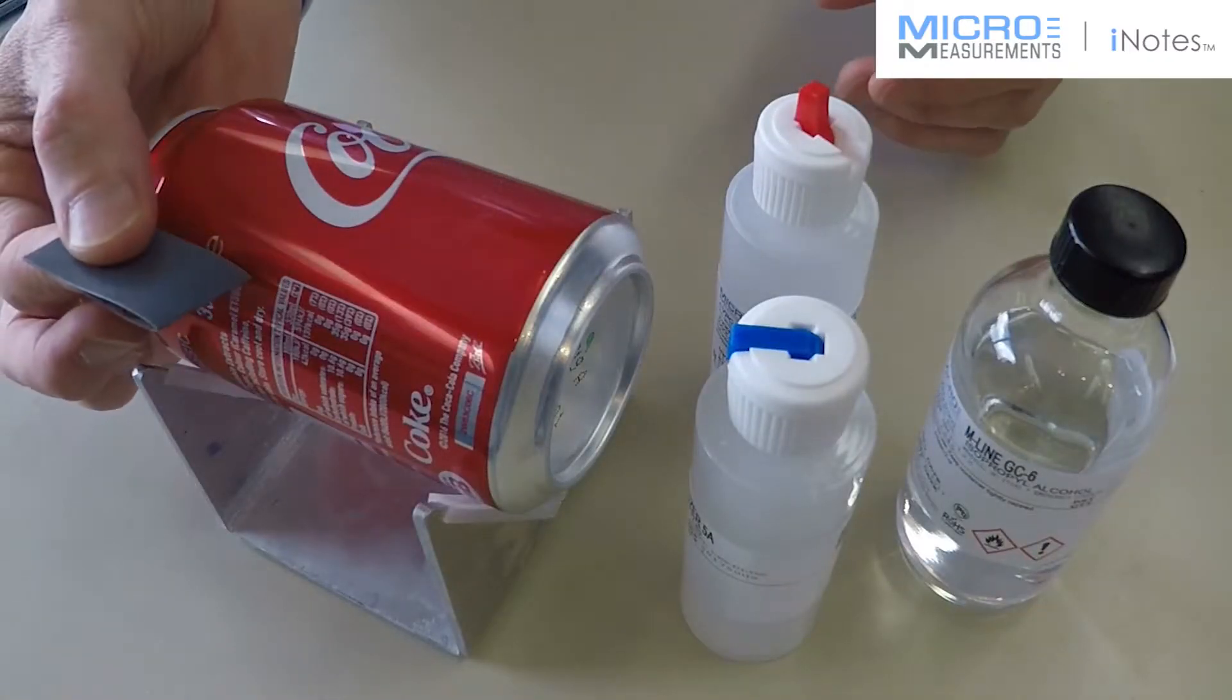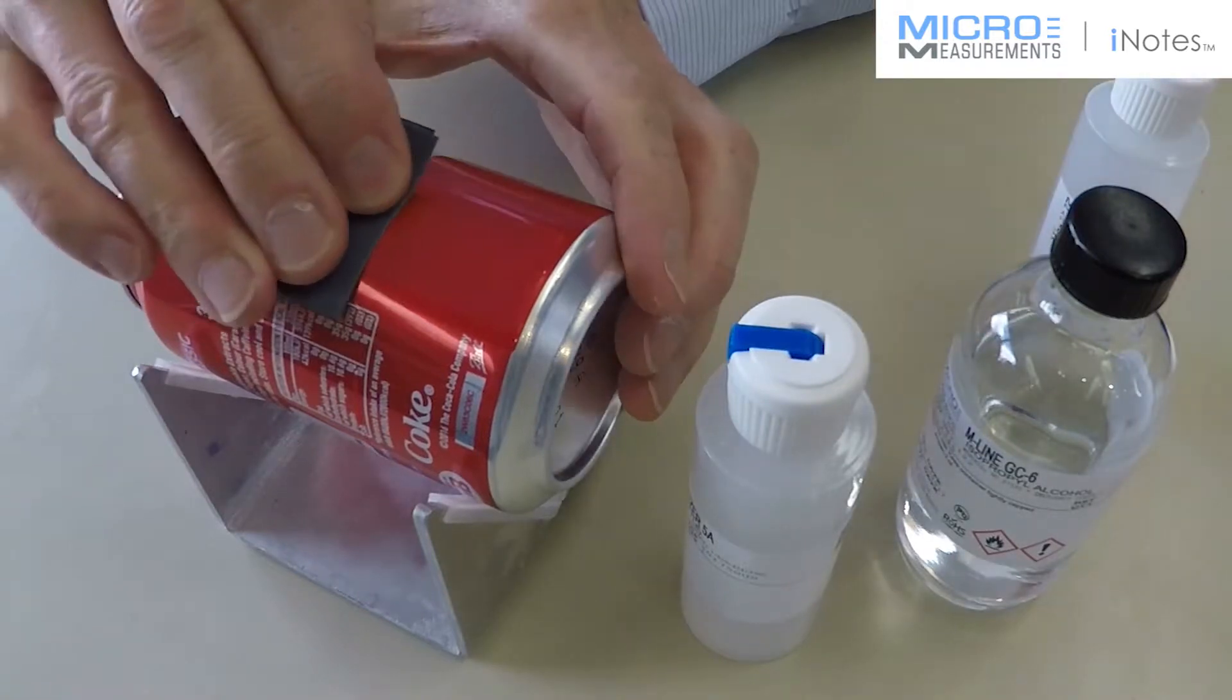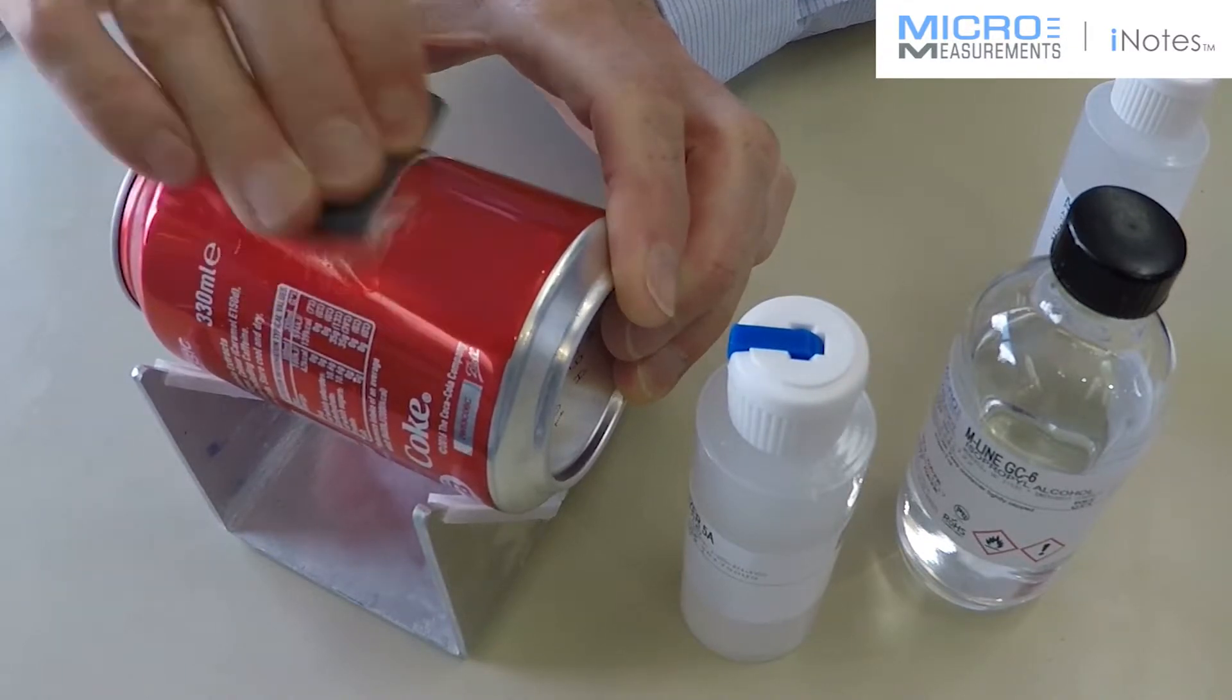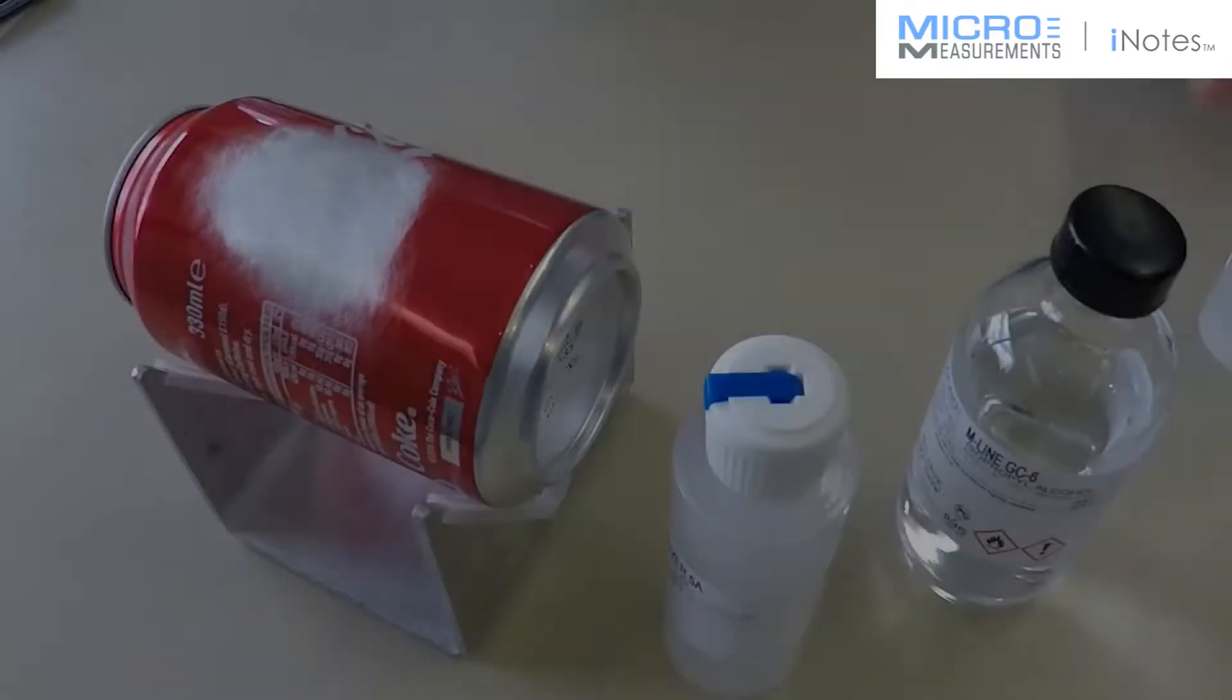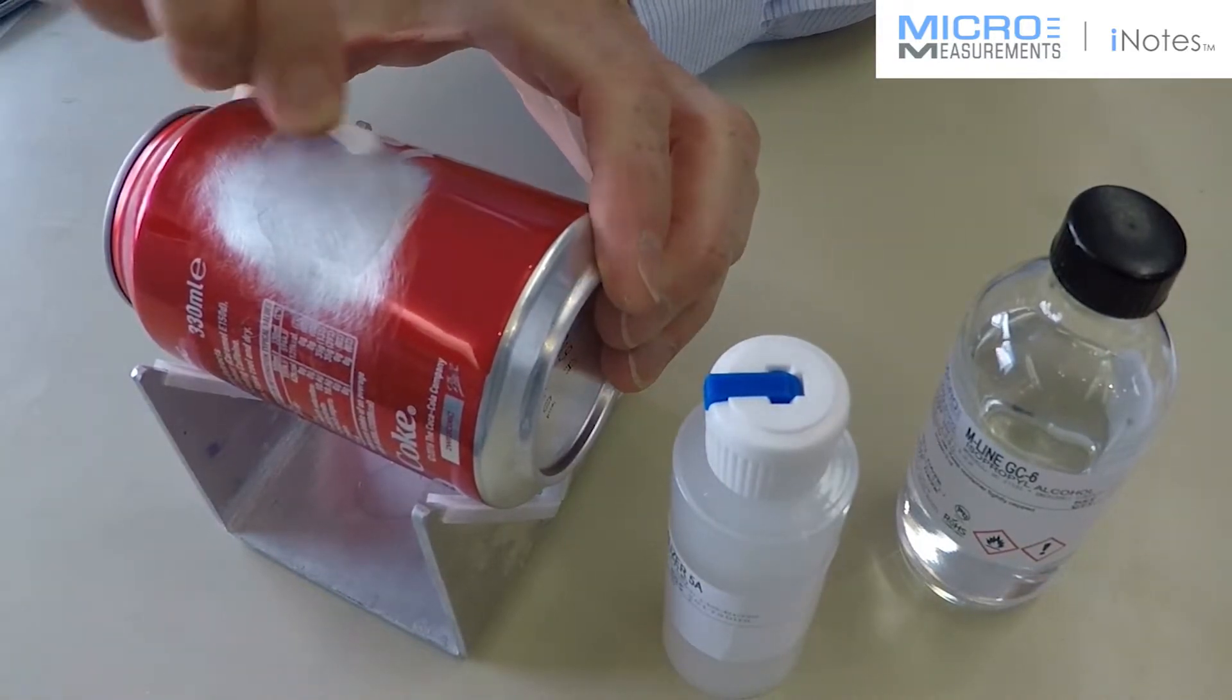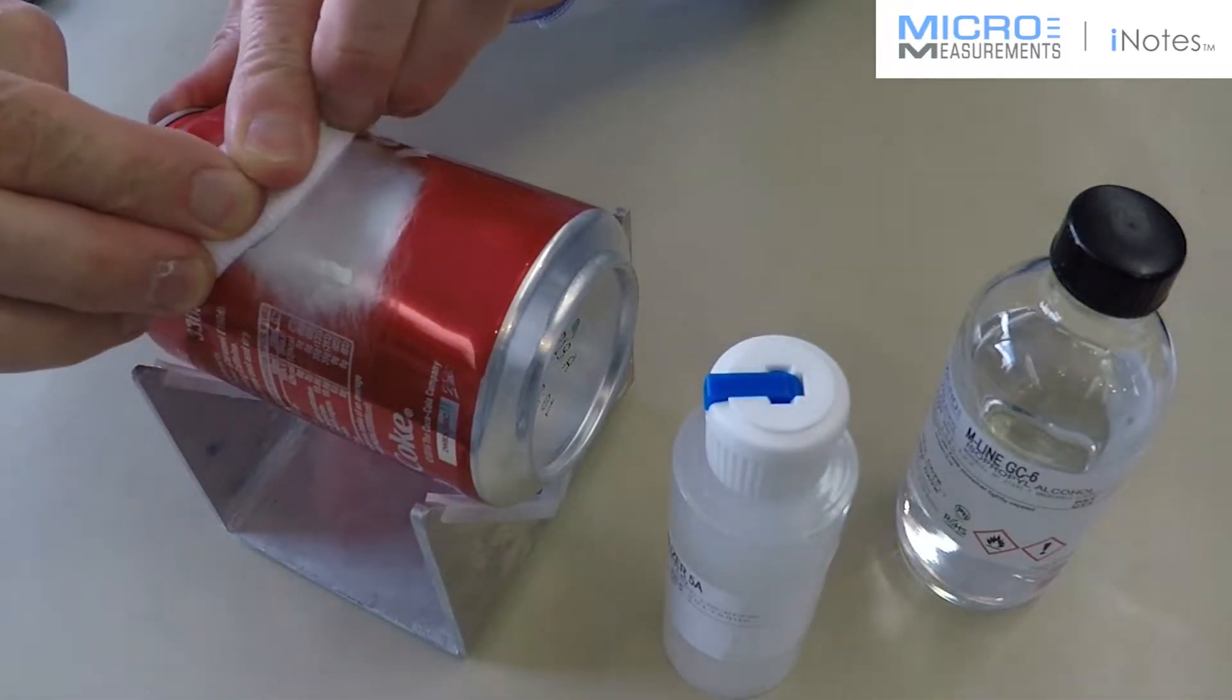Abrading using 400 grit silicon carbide paper. I'm going to put this on the surface and put some conditioner into where that meets the surface. And for the Coke can, it should just take a few seconds of abrading to remove the paint and get back to a good quality surface. A further scrubbing process to remove the rest of the contamination.